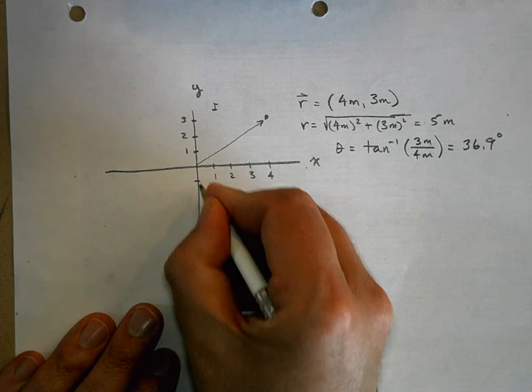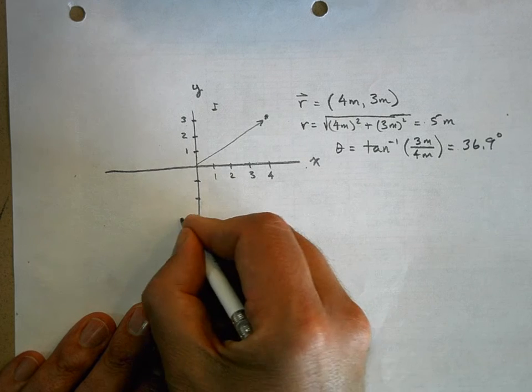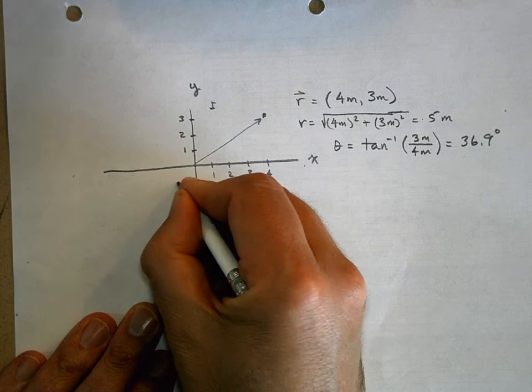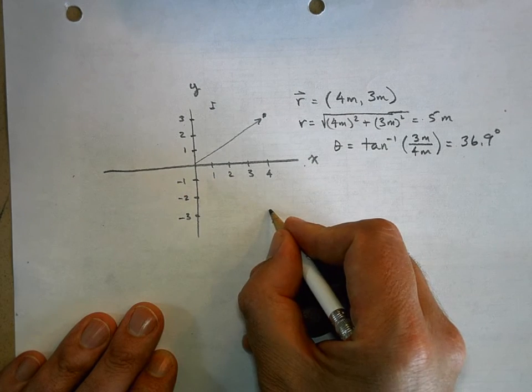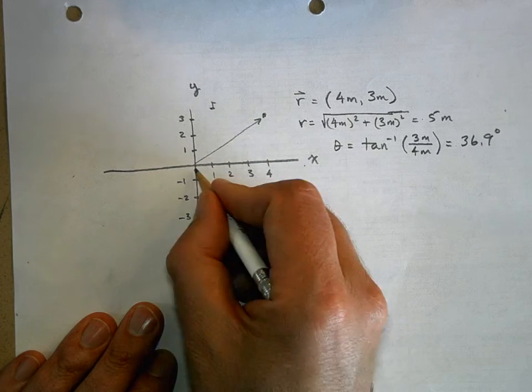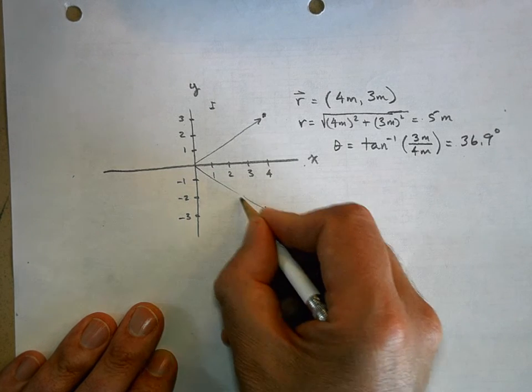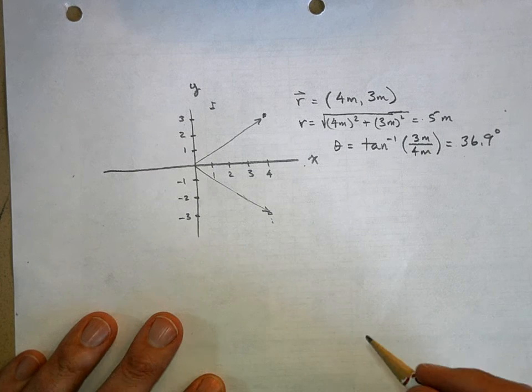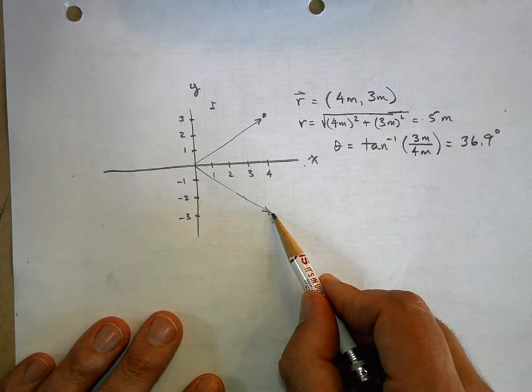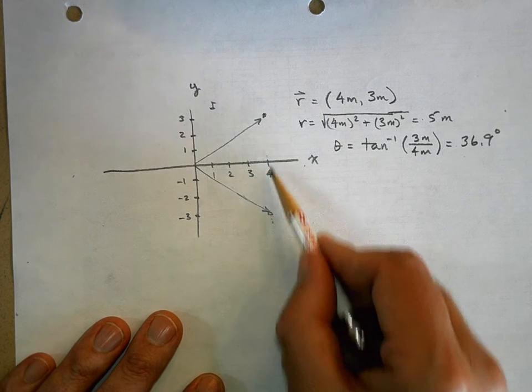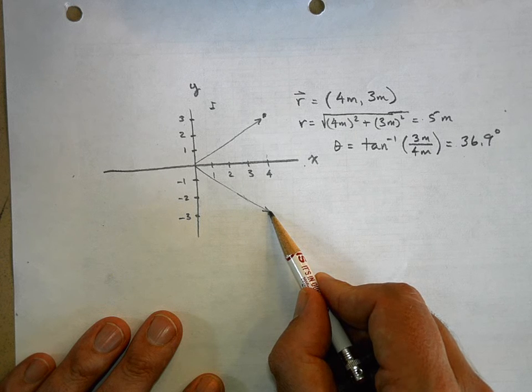So negative 1, negative 2, negative 3. What if it was down here instead? Well, I think you can see that even now your x quantity is still positive, but your y quantity is negative.